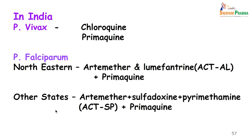In India, for treating Plasmodium vivax, chloroquine or primaquine is given. For P. falciparum in the northeastern states, artemether and lumefantrine as well as primaquine are given. In other states, artemether with sulfadoxine-pyrimethamine and primaquine are given. Chloroquine can be given in most cases where resistance is not seen.